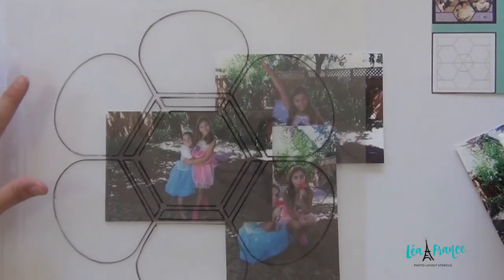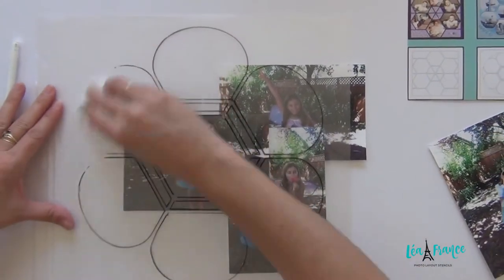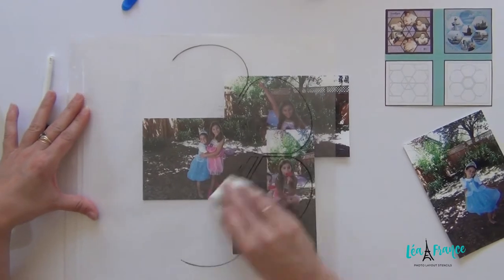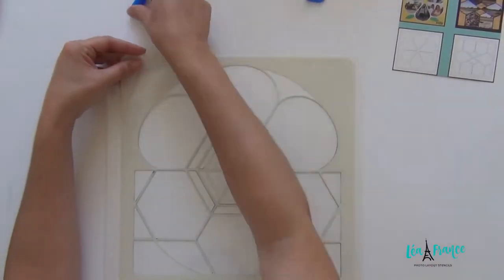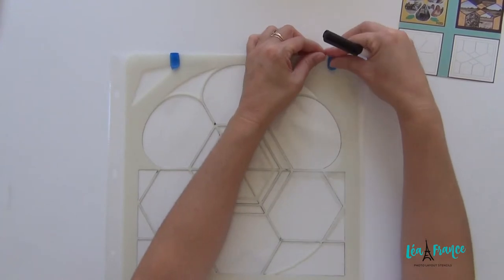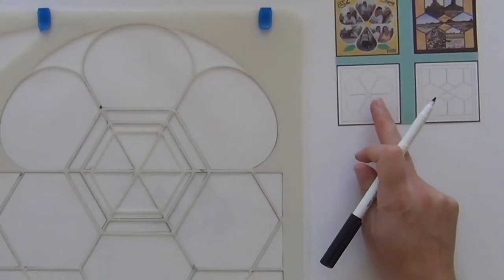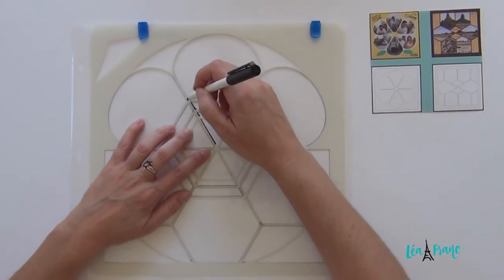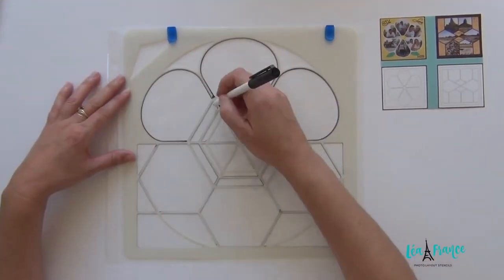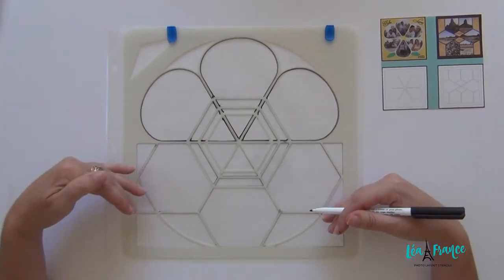So I'm done with this layout. So I erase everything. For this one, it's pretty easy. It's the whole petal. And then you just have to flip it.